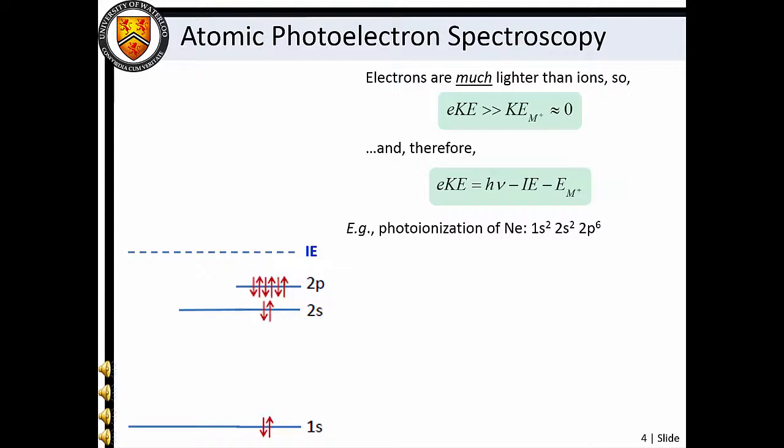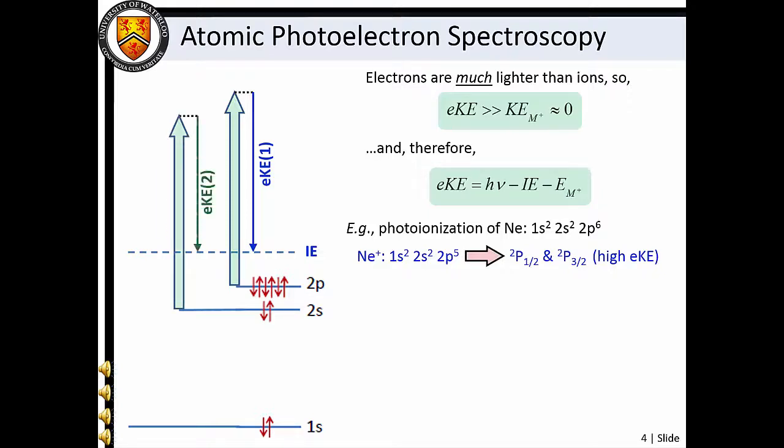For example, consider photoionization of atomic neon. If we excite neon with a high-energy photon such that we remove a valence 2p electron, we produce neon plus in its electronic ground state. The sum of the electron kinetic energy and ionization energy must equal the photon energy. If the same photon instead removes a 2s electron, neon plus is produced in its first excited electronic state. Since it takes more energy to reach the first excited electronic state of the ion, the correlated electron kinetic energy is lower. We could also view this in terms of the greater amount of energy required to remove the 2s electron compared to a valence 2p electron.